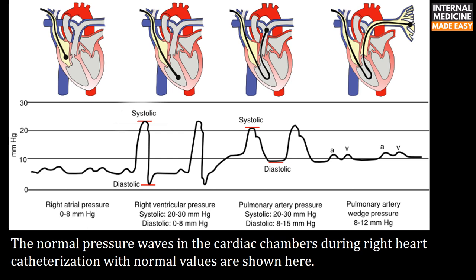The normal pressure waves in cardiac chambers during right heart catheterization: in the right atrium, a pulsatile waveform is seen and pressure ranges from 0 to 8 mmHg. In the right ventricle, systolic pressure ranges from 20 to 30 mmHg and diastolic pressure from 0 to 8 mmHg. In the pulmonary artery, systolic pressure ranges from 20 to 30 mmHg, diastolic pressure from 8 to 15 mmHg, and pulmonary artery wedge pressure ranges from 8 to 12 mmHg.